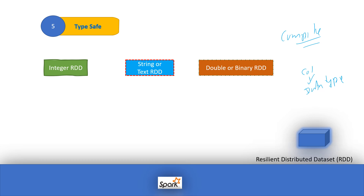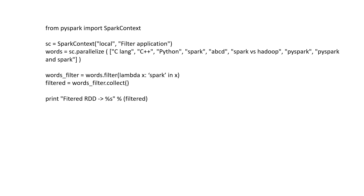In the next presentation, we'll talk about broadcast variables and accumulators, and we'll understand the high-level API. For today's presentation, we covered RDDs only. There are sample programs available on Google and in books. I hope you understand RDDs — thank you very much for watching.